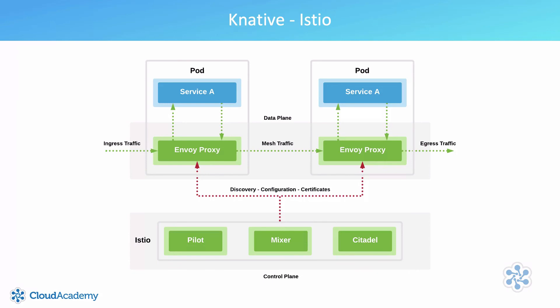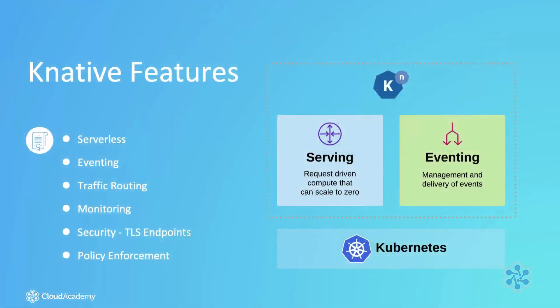With all of this in place, Istio provides Knative with the capabilities to perform dynamic network routing, load balancing, TLS encryption of data in transit, traffic splitting, and several other capabilities. As a quick summary, when you deploy Knative into your Kubernetes cluster, you get the following additional functionality: serverless, eventing, traffic routing, monitoring, security in the form of TLS endpoints, and policy enforcement.